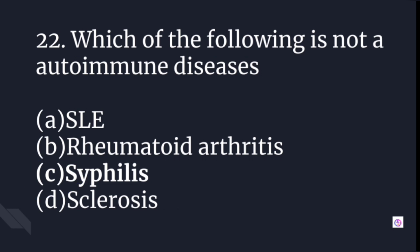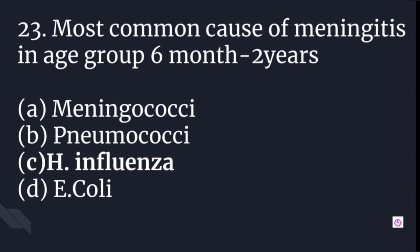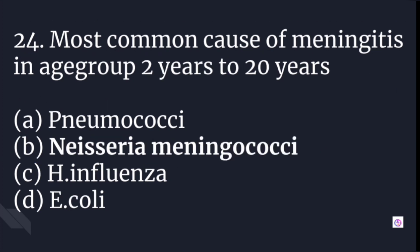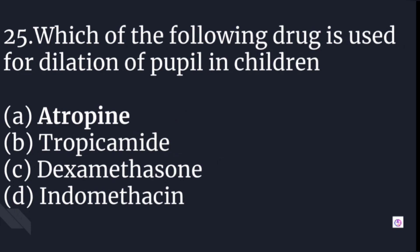The most common cause of meningitis in the age group of 6 months to 2 years is H. influenzae. The most common cause of meningitis in the age group of 2 years to 20 years is Neisseria meningococci. The drug used for dilatation of the pupil in children is atropine.